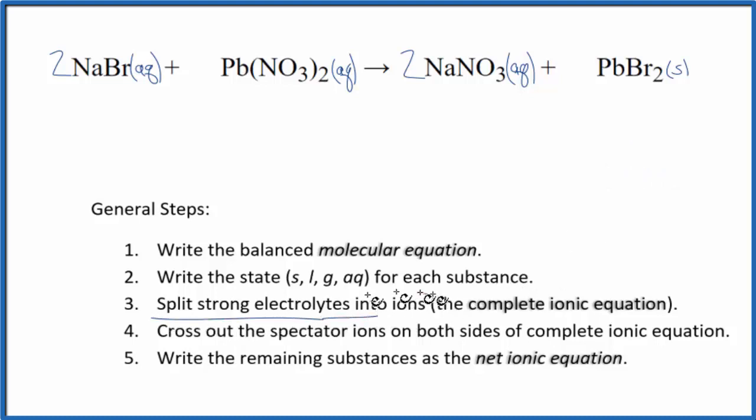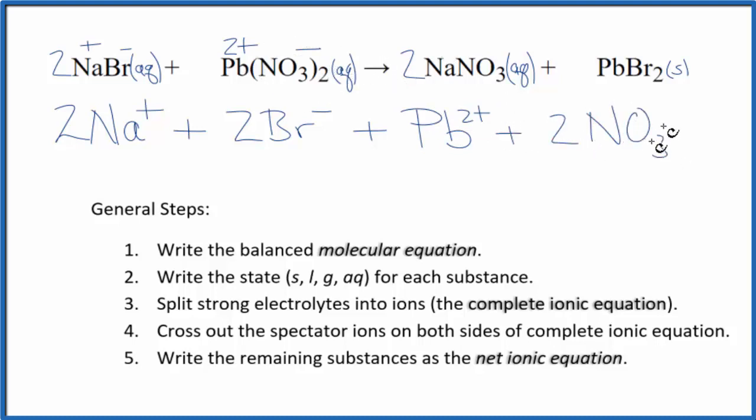Now, we can split the strong electrolytes into ions for the complete ionic equation. Sodium on the periodic table, that's in group 1. So it's 1 plus bromide ion, that's negative. So two sodium ions, 2 Na plus, and I won't write the states right now. Let's write those at the end. Plus two bromide ions, Br minus. Then lead, that's a transition metal. So we need to look at what it's bonded to to figure its charge out. The nitrate ion, the whole thing is always 1 minus. And we have two of them. So this has to be 2 plus. So we have a lead-2 ion plus two nitrate ions. And these are the reactants in our net ionic equation.